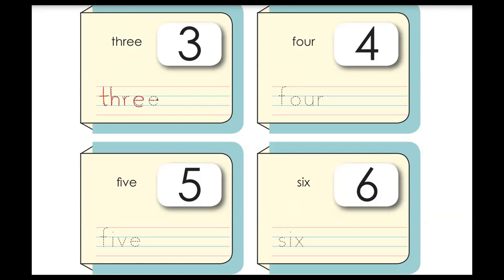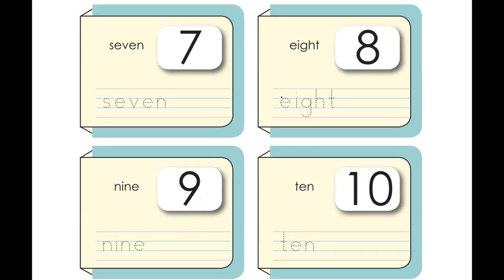T-H-R-E-E, three. Four — how do we spell four? F-O-U-R, four. Very good. Next, five — how do we spell five? F-I-V-E, five. Very good. Next, six — how do we spell six? S-I-X, six. Perfect.